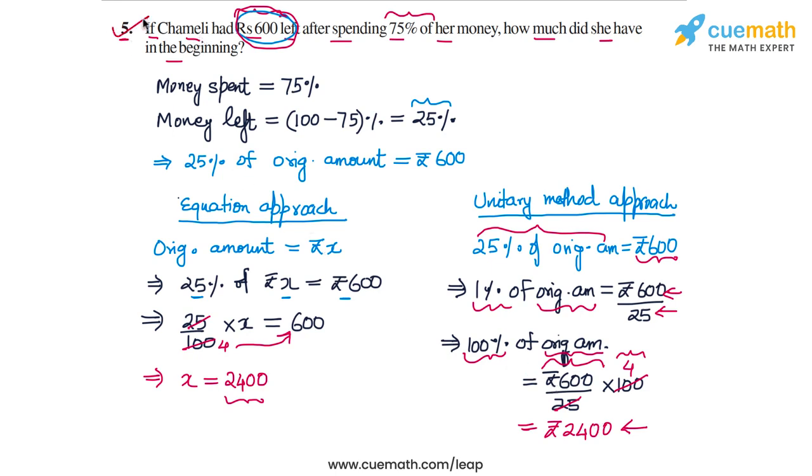The answer to question 5 is that Chamelee had Rs. 2400 in the beginning.